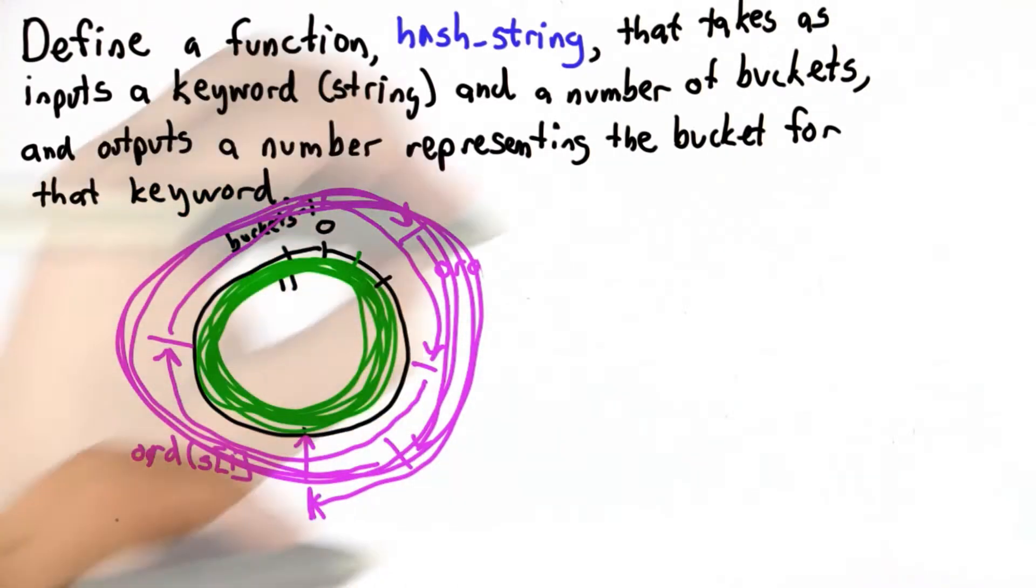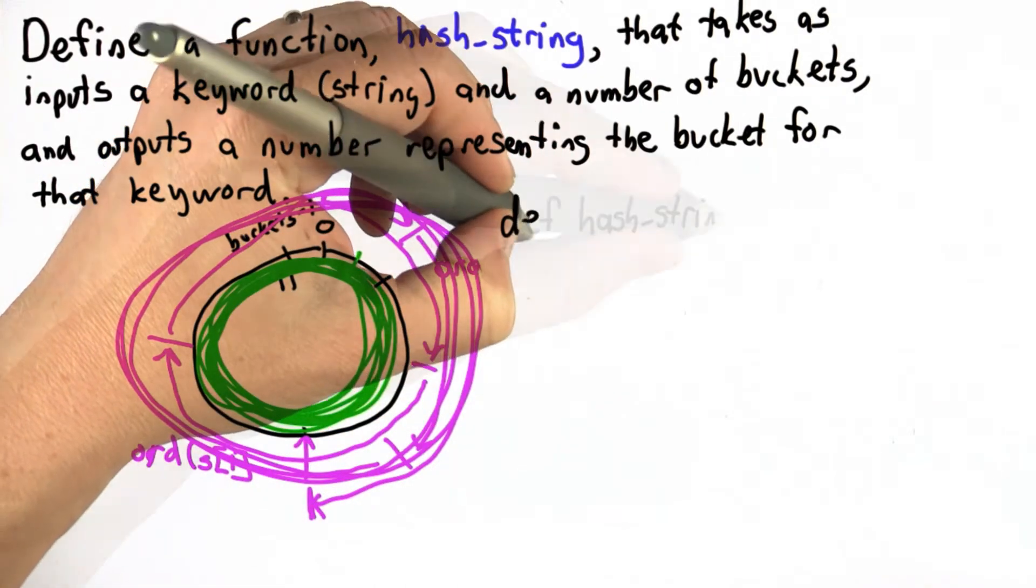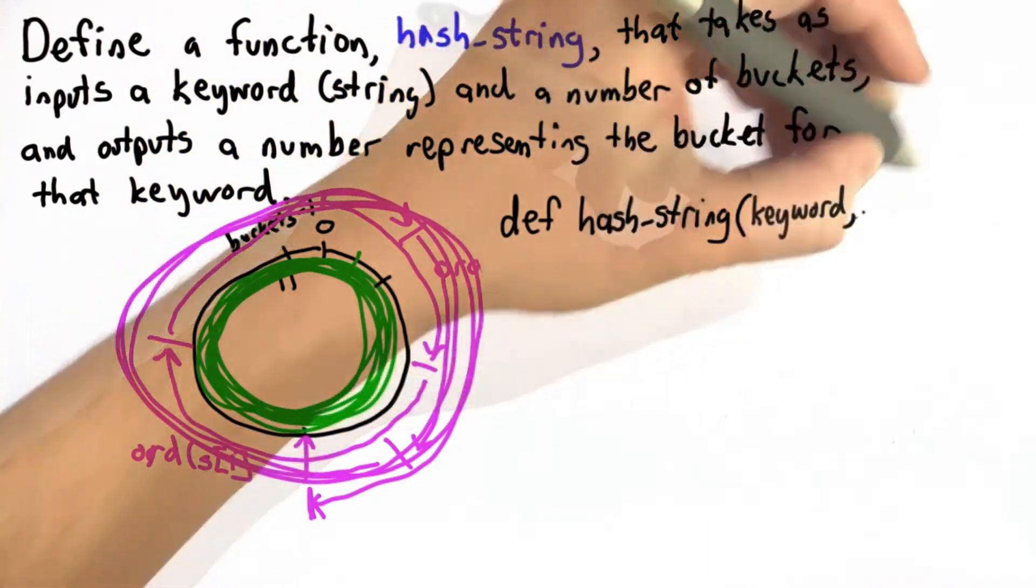So what we need to do is define a function. We're going to define a function hash string, and it takes two inputs, the keyword and the number of buckets.